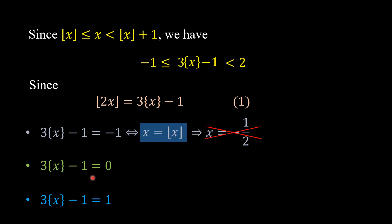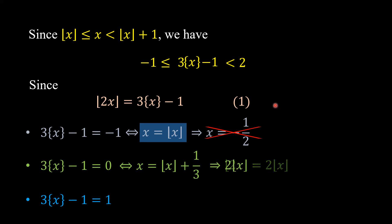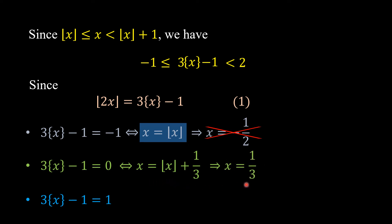For the second case, where the right-hand side equals 0: this is equivalent to {x} = 1/3, which means x = floor(x) + 1/3. Then 2x = 2·floor(x) + 2/3. Since the largest integer less than or equal to 2x is 2·floor(x), we have floor(2x) = 2·floor(x). Substituting into the equation gives 2·floor(x) = 0, so floor(x) = 0. Therefore x = 0 + 1/3 = 1/3.